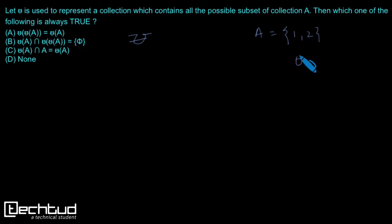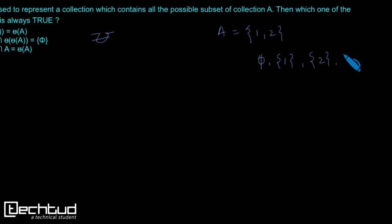The possible subsets can be phi (phi is always a subset of course), then we will have a subset where there is only 1 element that is 1, we can have a subset which is 2, and of course this set A is subset of itself, so we will have {1, 2}. What this collection is basically nothing but power set of A.